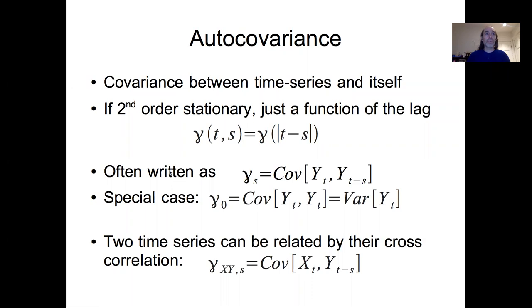So this autocorrelation is often written instead of writing it as autocorrelation between time t and time s being a function of the distance between t and s. You can often write this just as the covariance at lag s, the covariance between Y_t and Y_{t-s} so that's a lag of s.